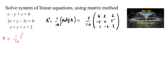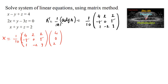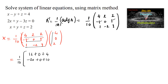Now X = A⁻¹B. Multiplying (1/10) × [4, 2, 2; -5, 0, 5; 1, -2, 3] by the constant matrix [4, 0, 2]: first row: 4×4 + 2×0 + 2×2 = 16+0+4 = 20; second row: −5×4 + 0×0 + 5×2 = −20+0+10 = −10; third row: 1×4 + (−2)×0 + 3×2 = 4+0+6 = 10.